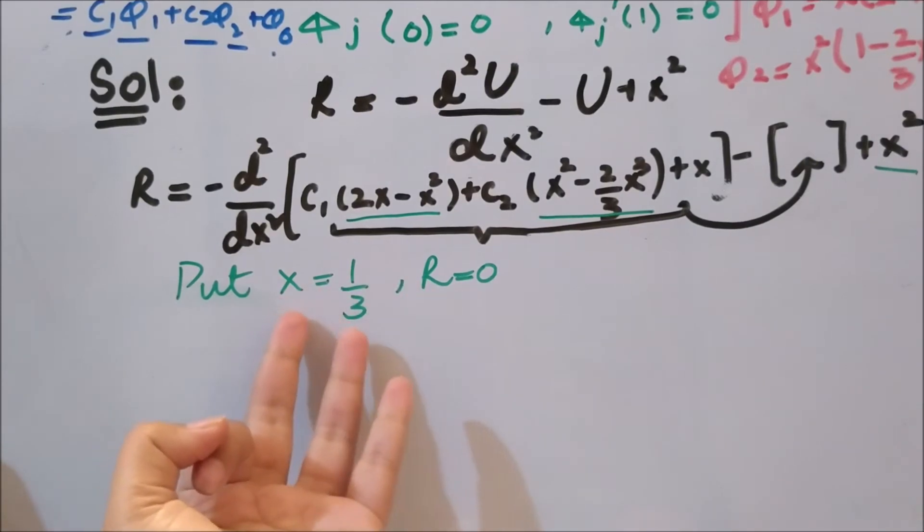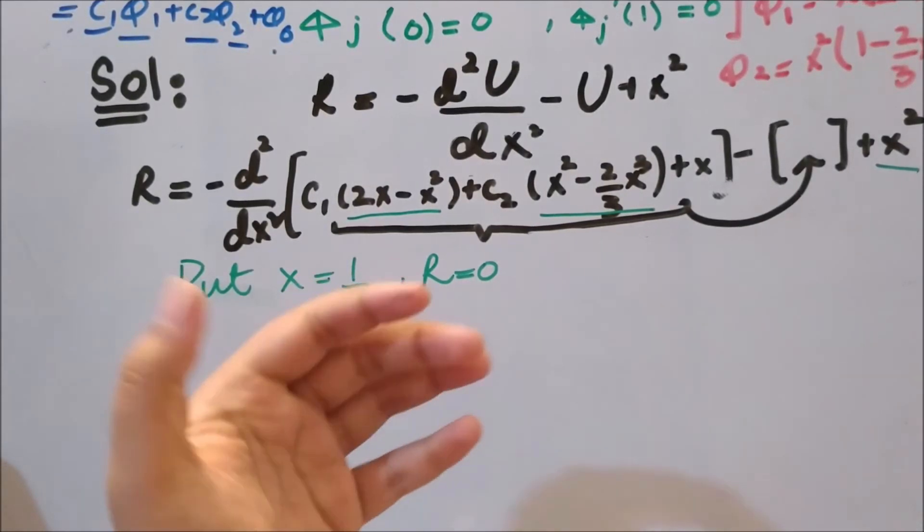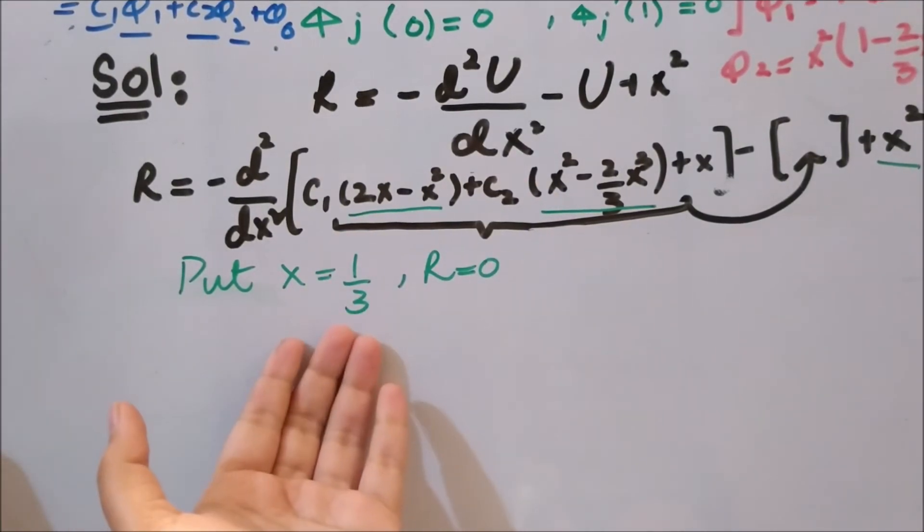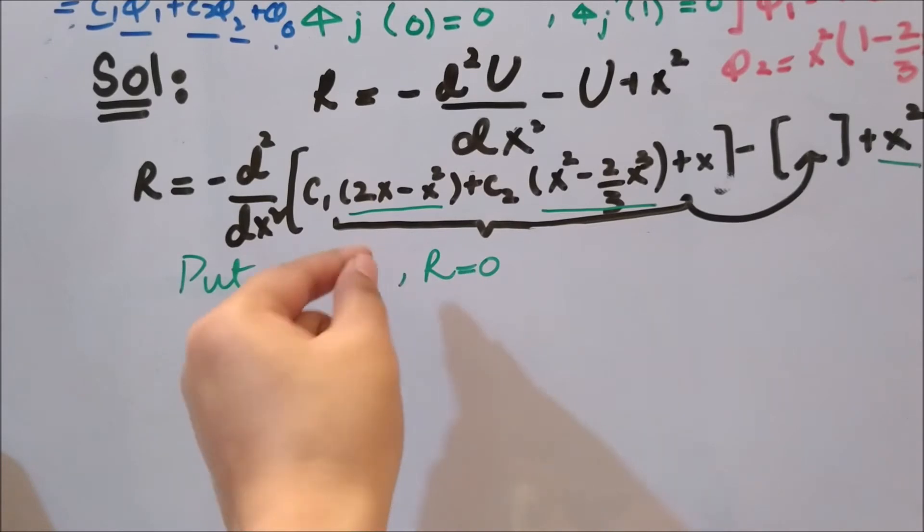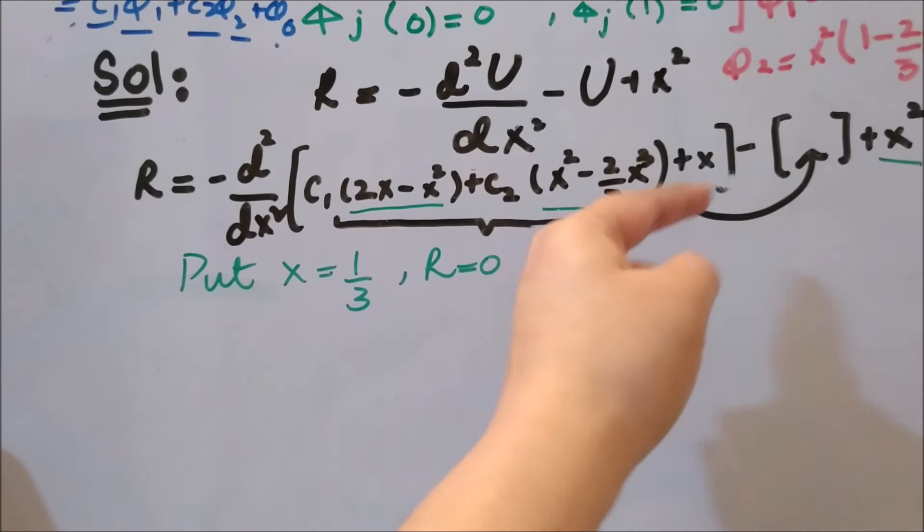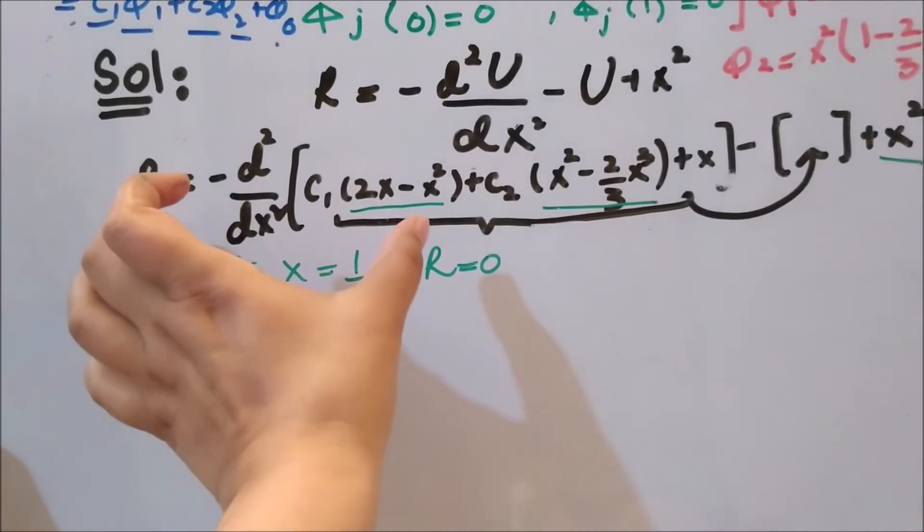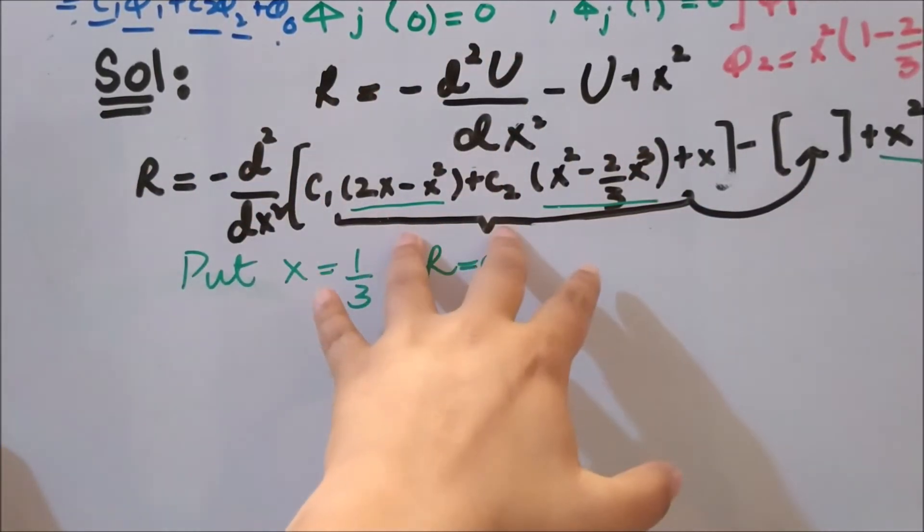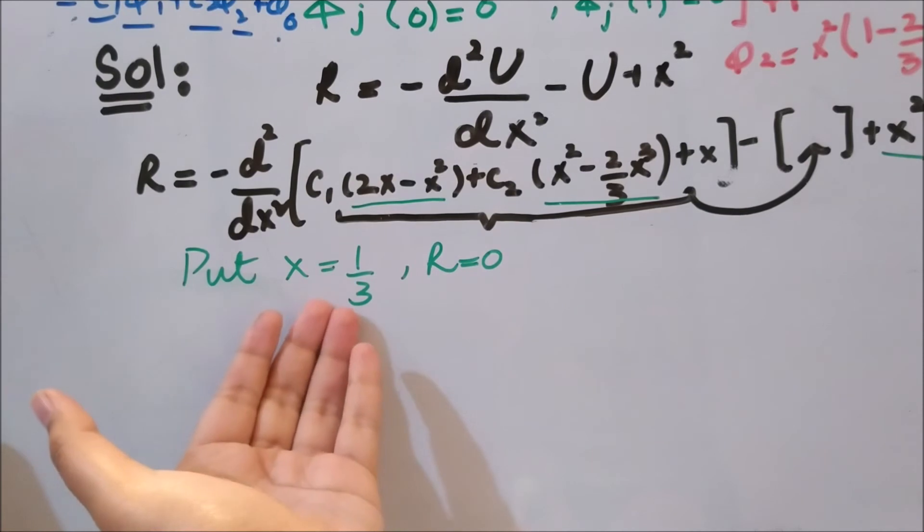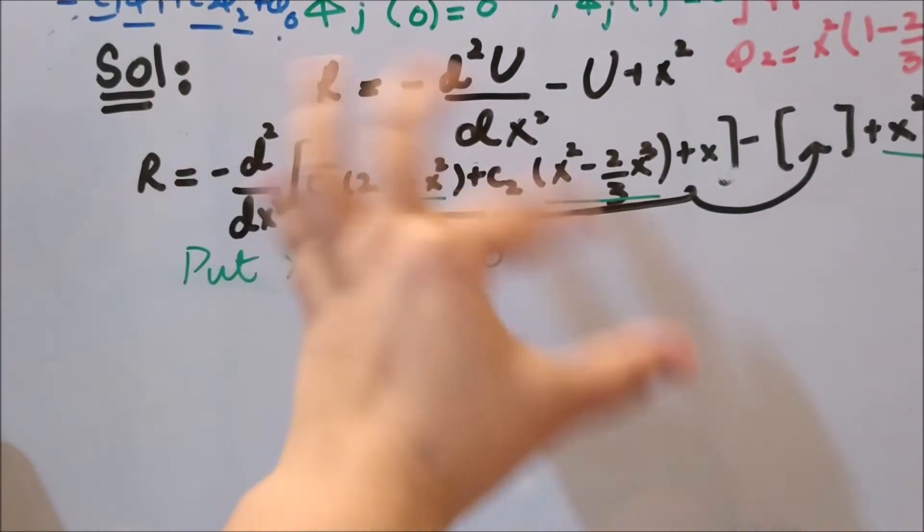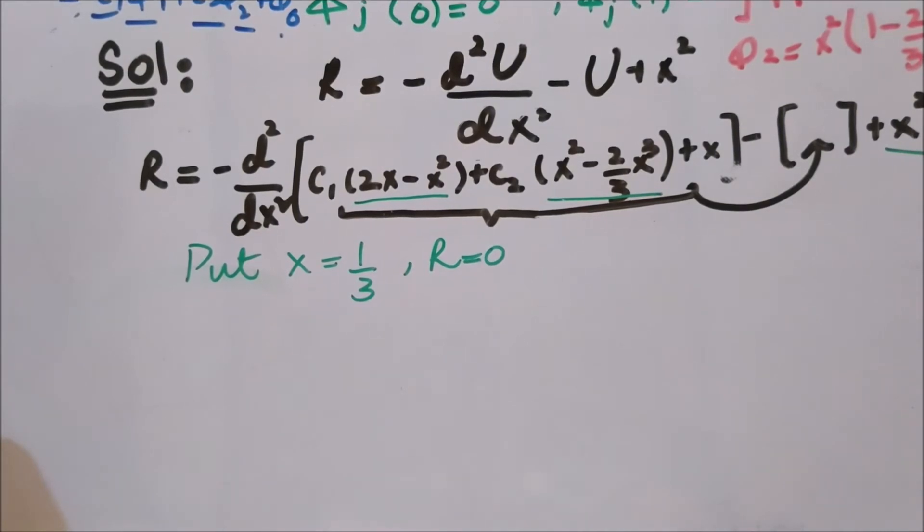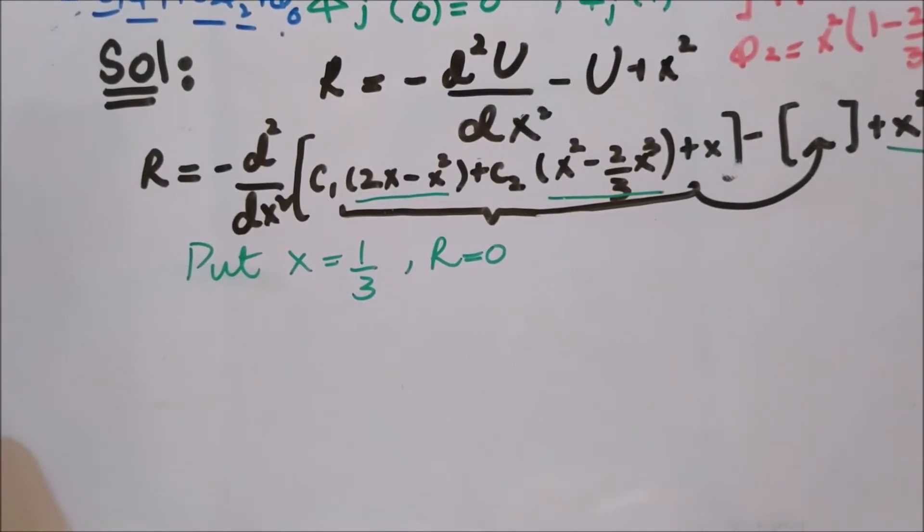We have to put or plug x equal to one-third. The first collocation point was one-third, the second collocation point is two-thirds. For the first collocation point, we have to plug one-third here, one-third here, and so on. But we have to solve this R first. You have to take the derivative, the second derivative of this, and solve this R. Then plug x equals one-third and put this whole thing equal to zero to get an equation. If you do all of these things, you will end up with this equation right with only two variables, c1 and c2.